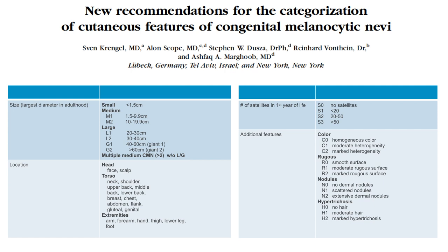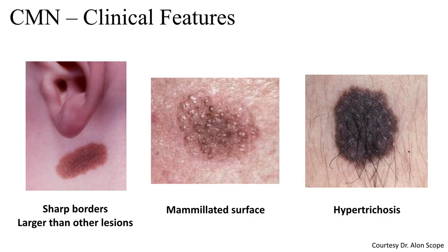There are other criteria that are useful and important for categorizing congenital nevi, such as the location on the body, the presence of satellites, the color, rugosity, nodularity, or hypertrichosis present in the lesion.